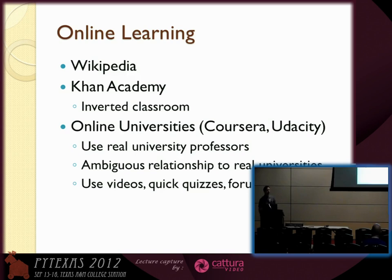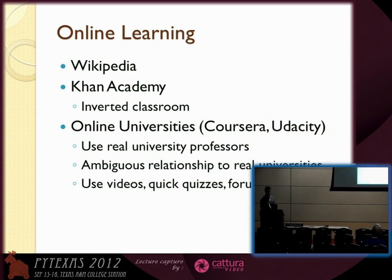Looking at a little bit of the history of online education and online learning, of course there's the big daddy Wikipedia. Wikipedia is really this online encyclopedia that has a huge amount of information and you can go out there and look up whatever you want, but it's a little passive. You've got to sort of search for what you want. So it's good for self-motivated learners, but the information there, if you're just diving into something, can be a little advanced — particularly if you're trying to learn things like mathematics and science.